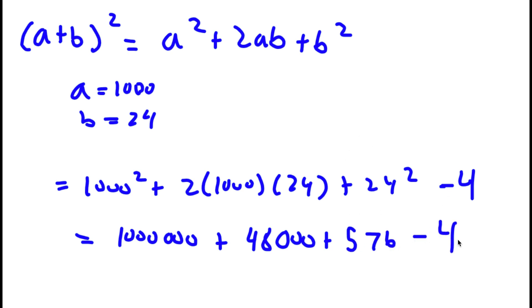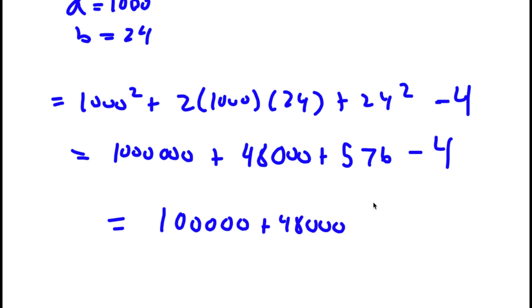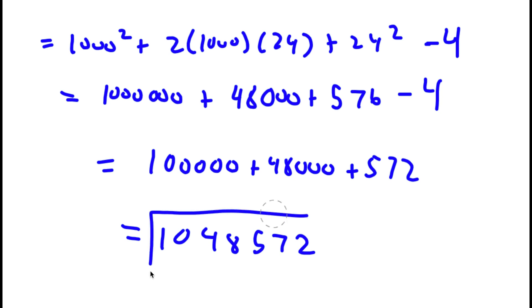So I have 576 minus 4, and 576 minus 4 is 572. So I have 1,000,000 plus 48,000 plus 572, and this is equal to 1,048,572. So this is my answer.